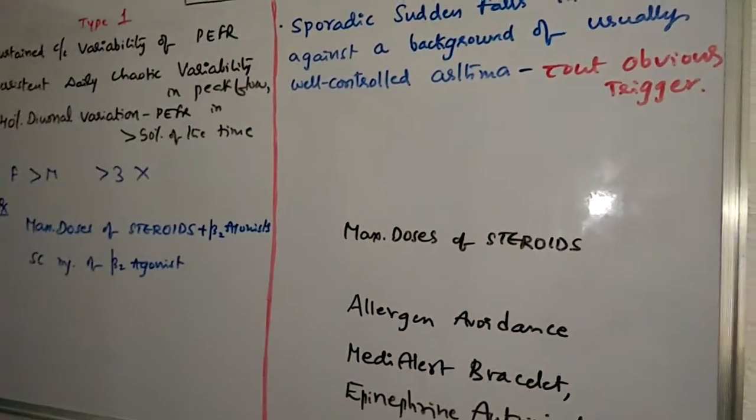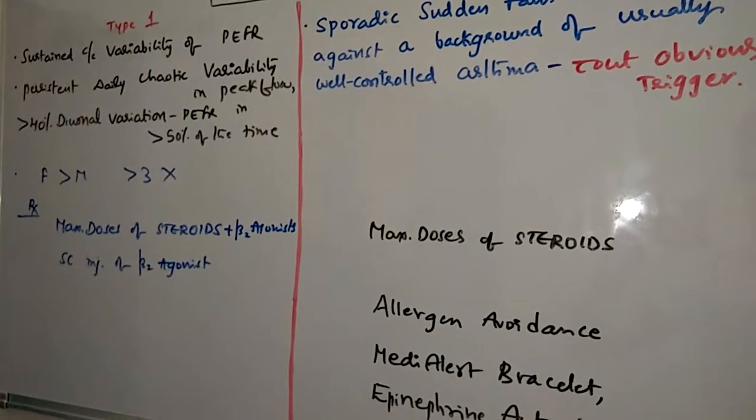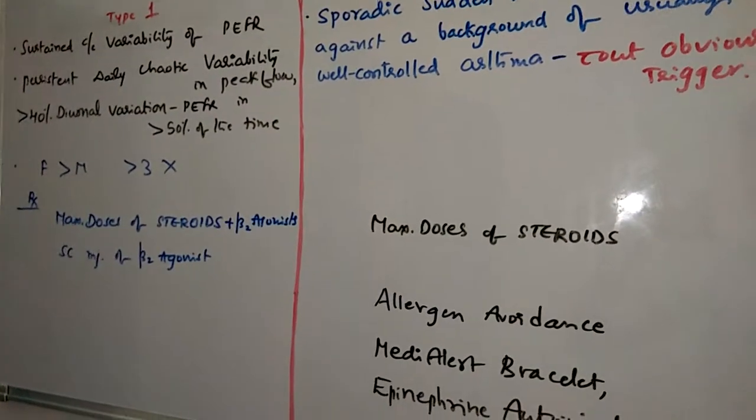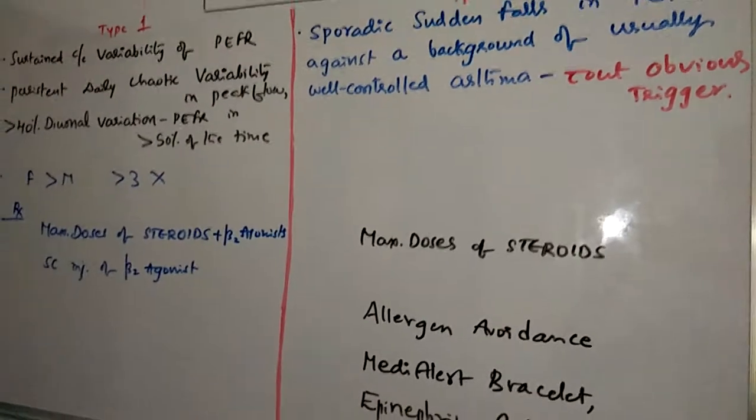Treatment of type 1: maximum dose of steroids either oral or inhaled form plus beta-2 agonists. An additional subcutaneous injection of beta-2 agonists like salmeterol and formoterol.